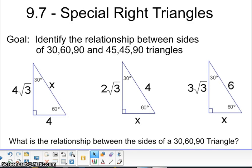Hi, this is Mrs. Slater, and today we're going to talk about special right triangles. To identify those relationships between a 30-60-90 and a 45-45-90 degree triangle, we must first utilize the Pythagorean Theorem.